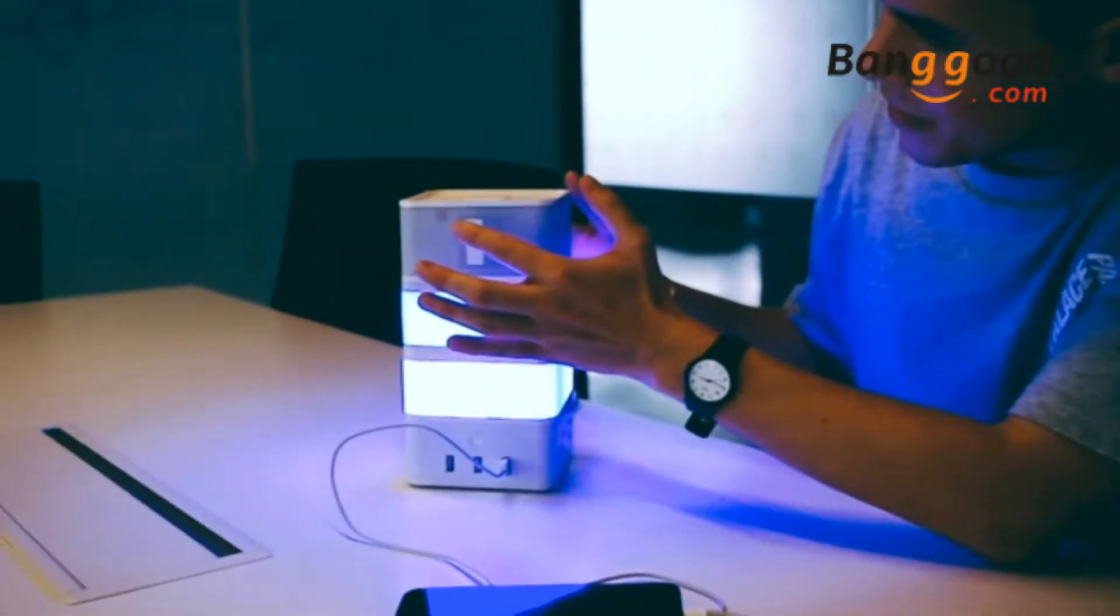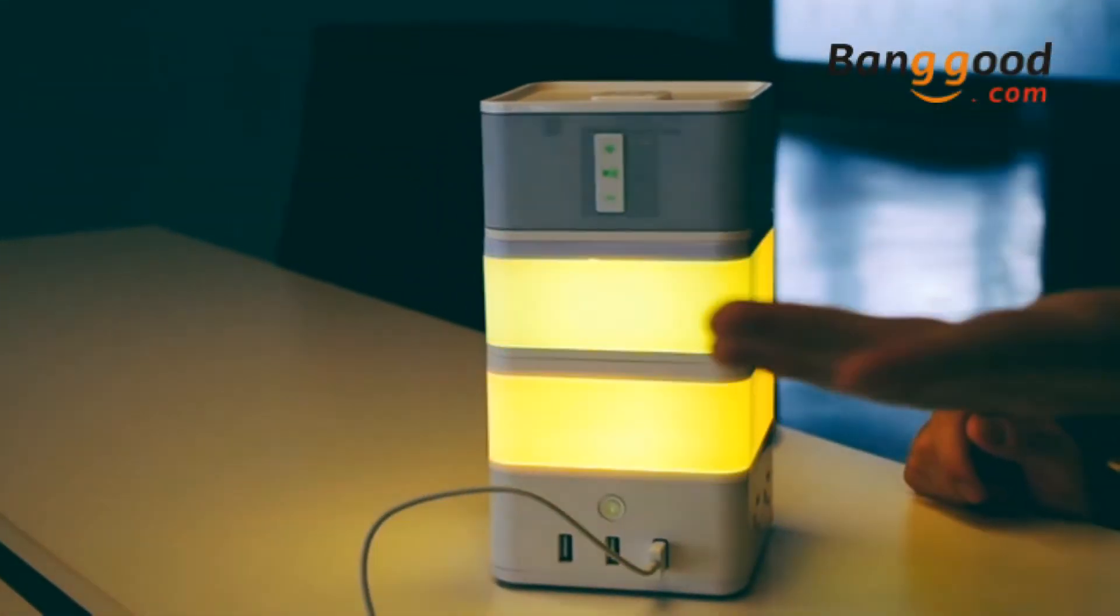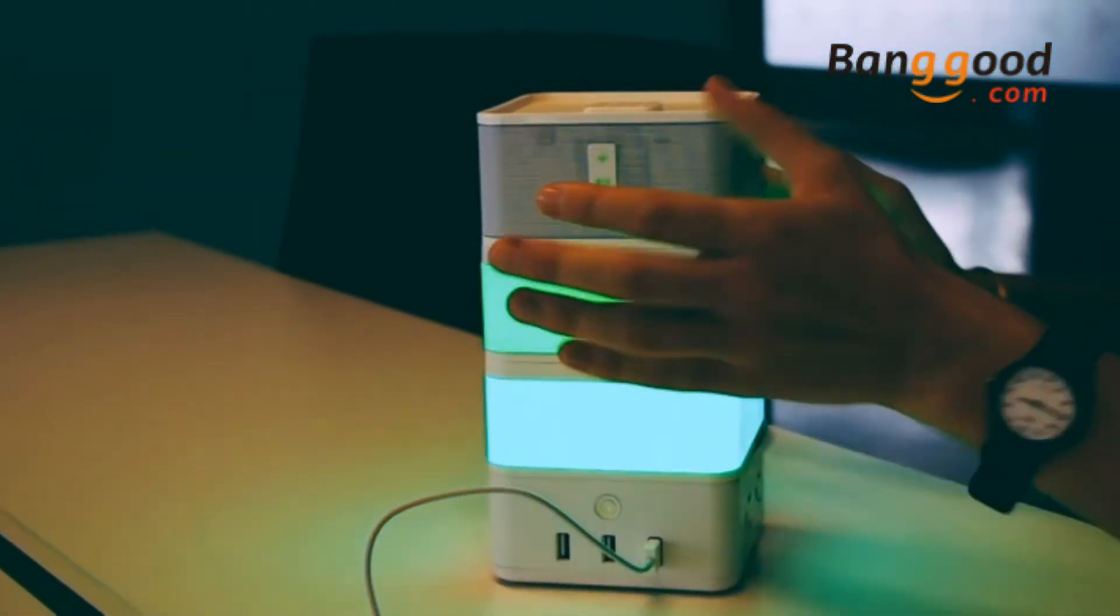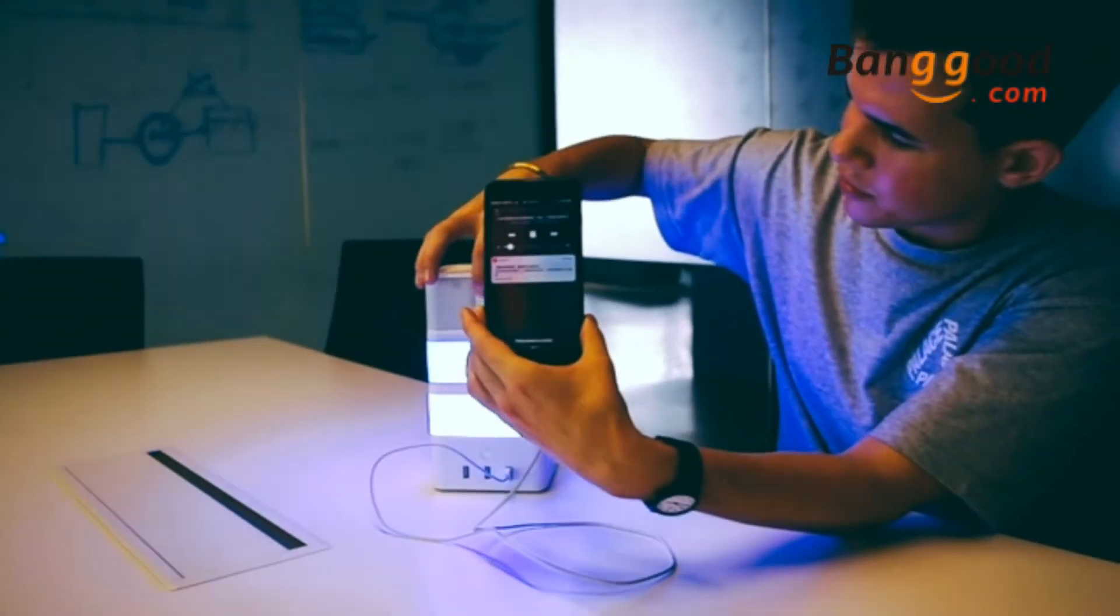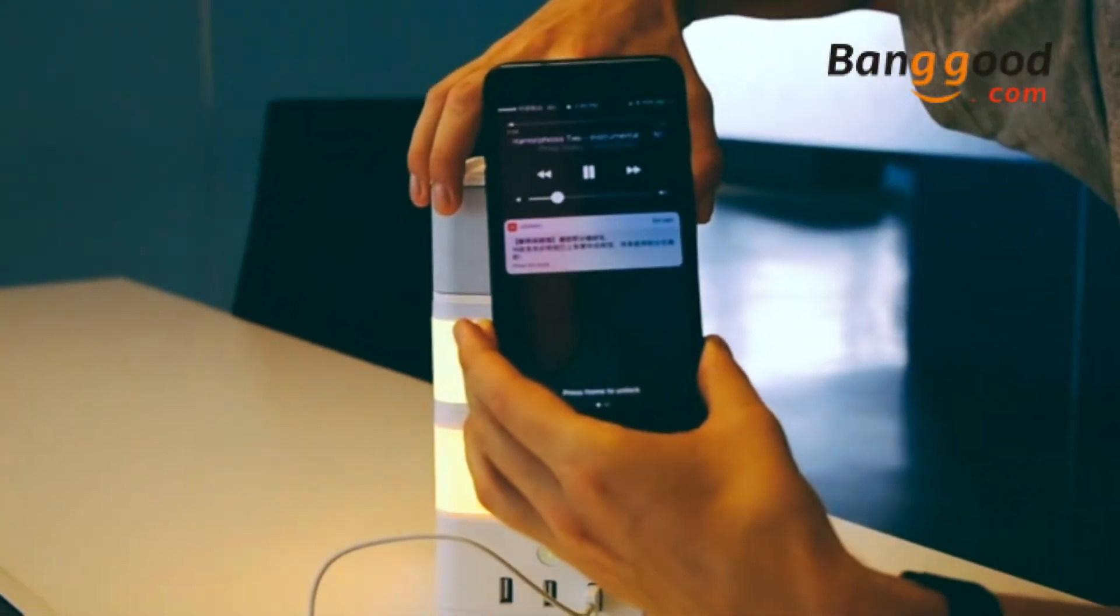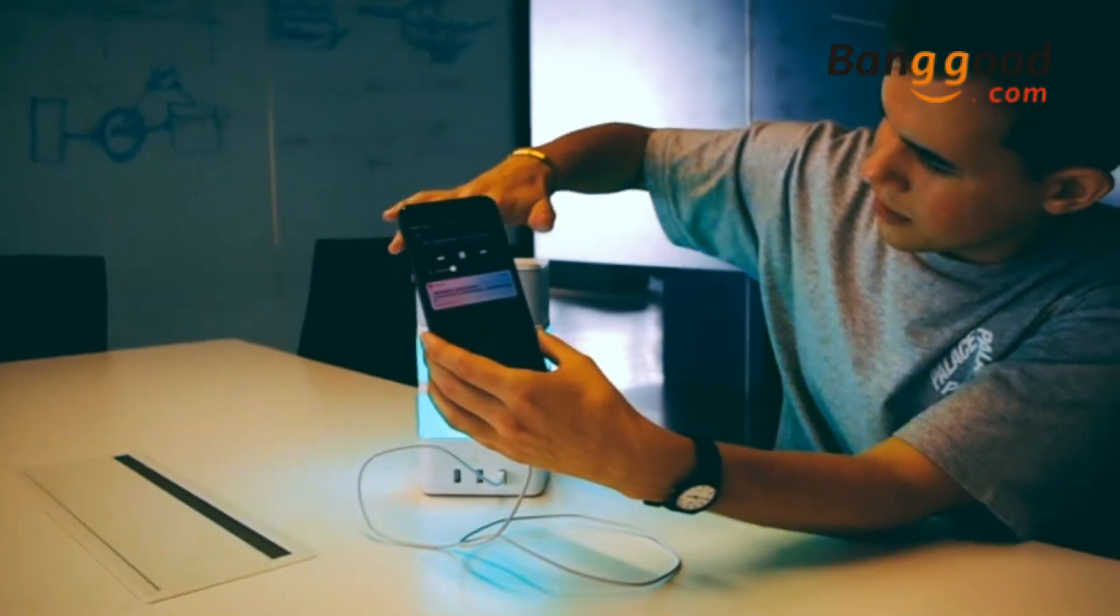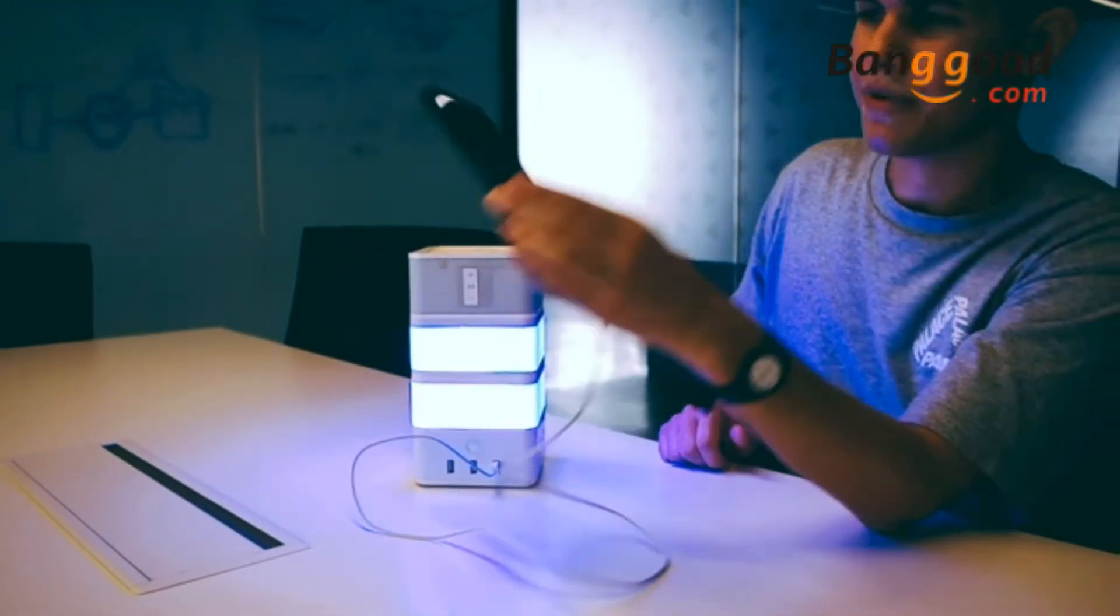And we can also change the track by just tapping this button on the top. We've got a new song. You can turn the volume down by holding it, and as you can see, it works by just touching it. It's interacting with your device. So pausing it is as simple as just tapping it there.